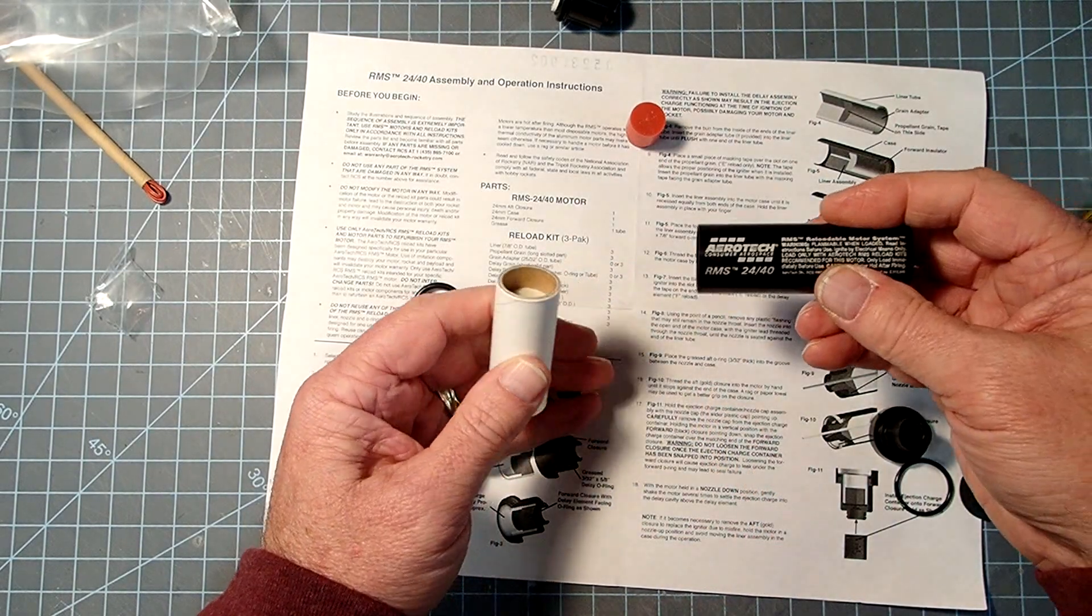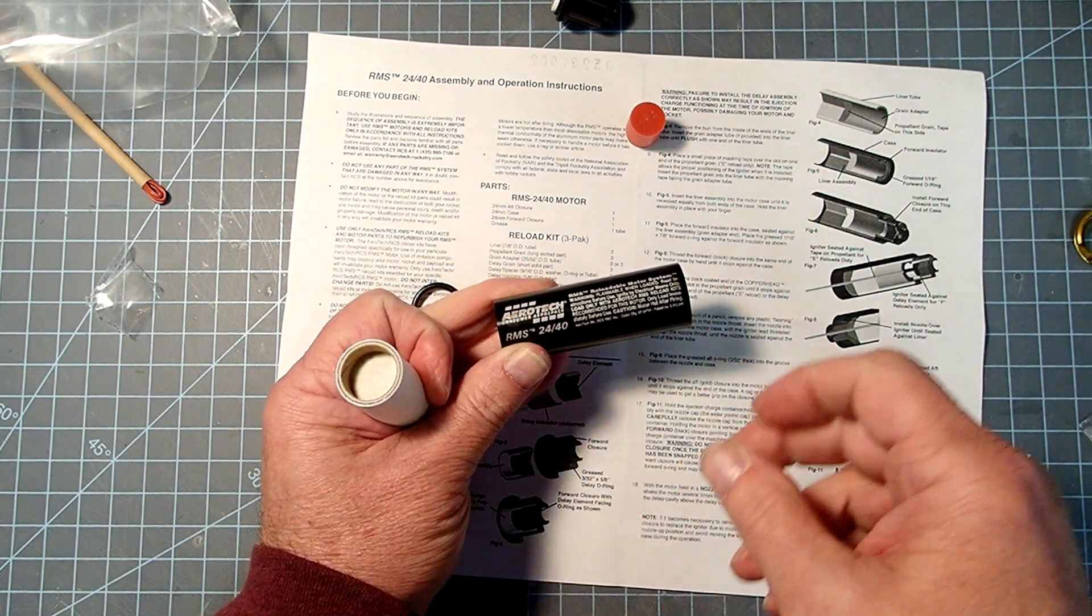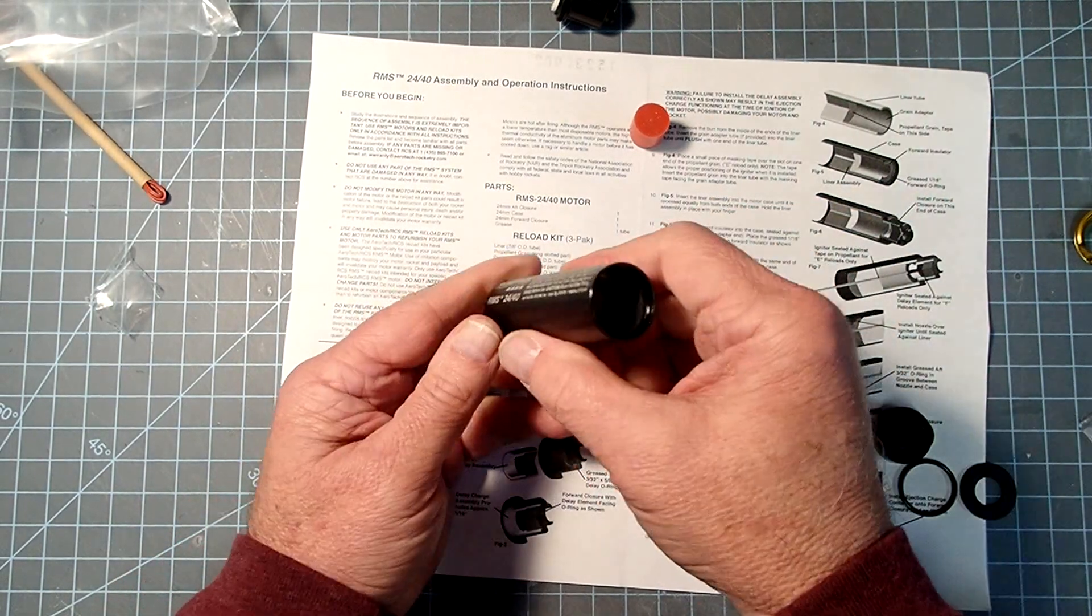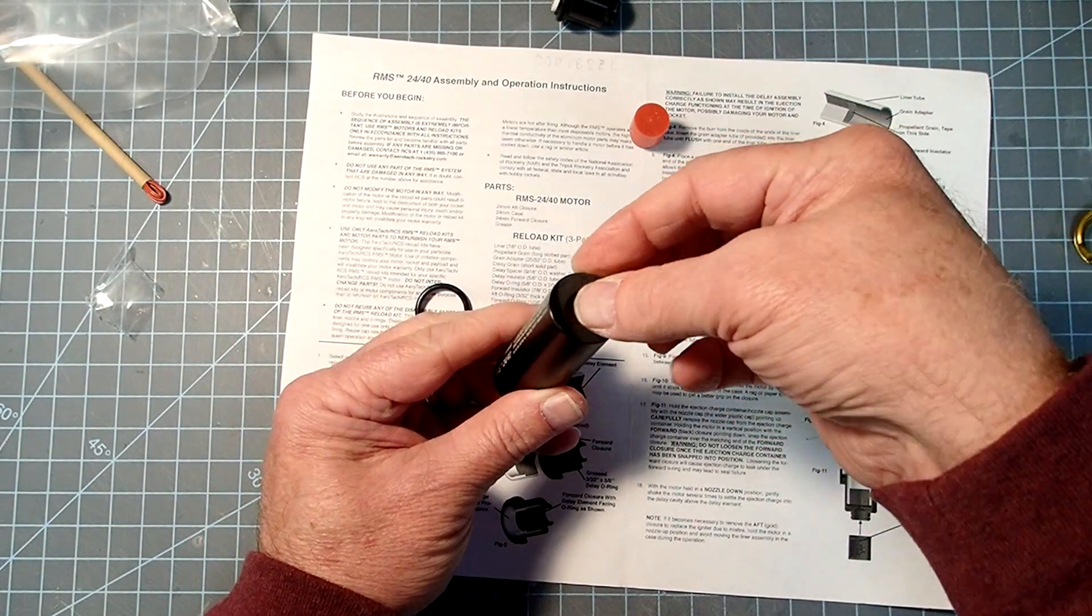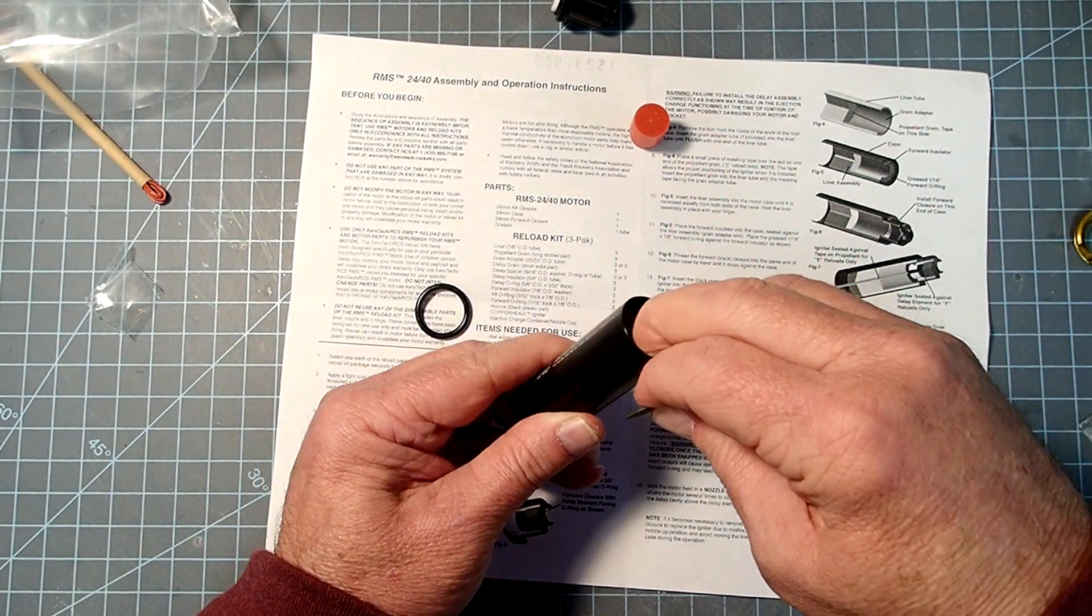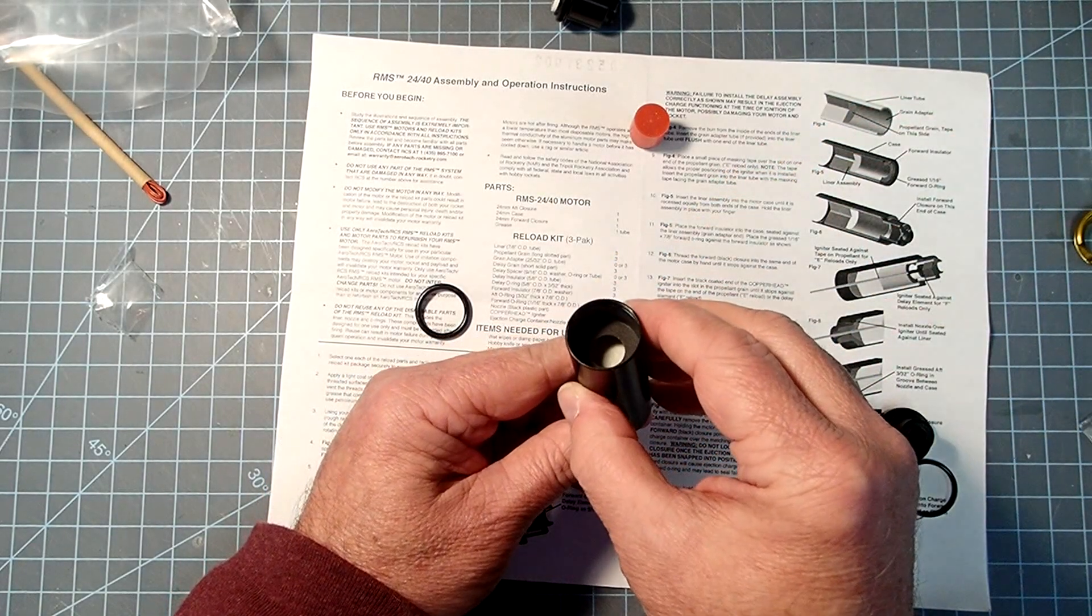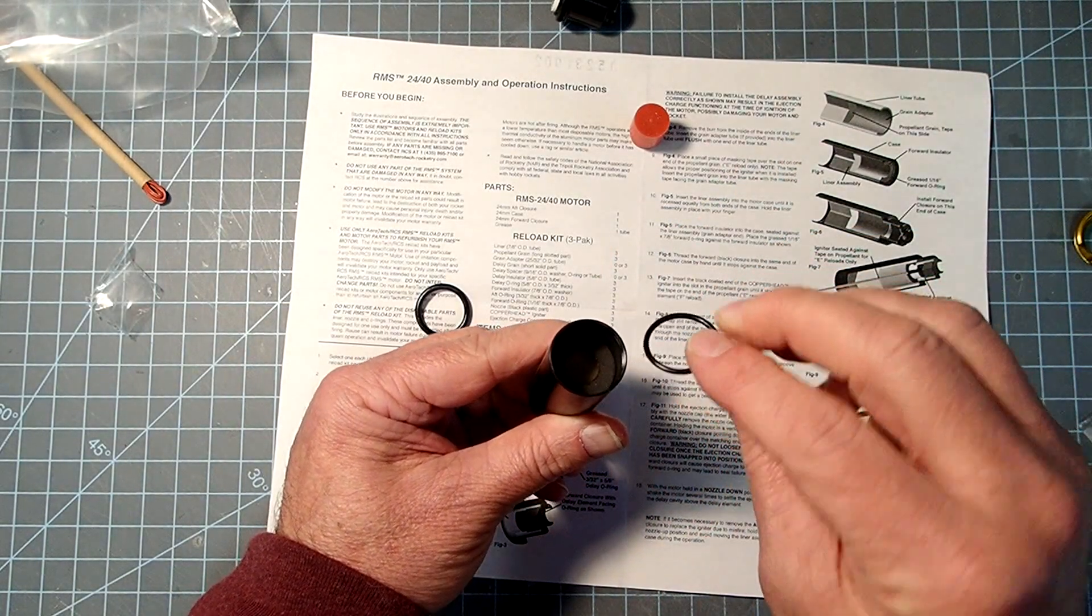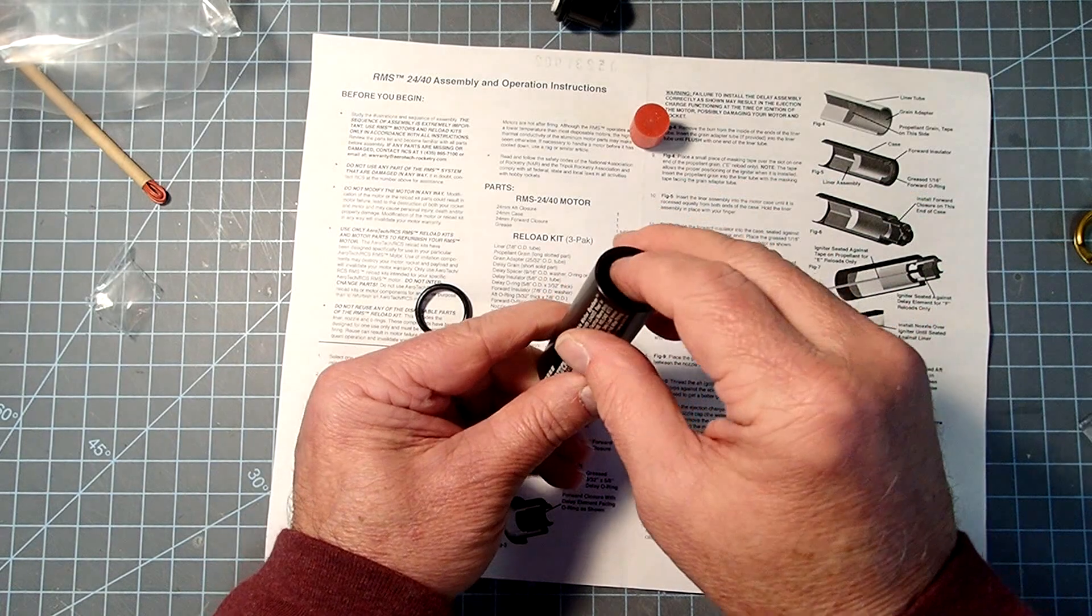Now we'll take the casing, decide which end is forward. It doesn't matter which one you use. I always put the Aerotech logo down at the aft end. So I'm going to slide this in. And then I'm going to take the insulating ring here, and that goes right on top. It's going to go right on top of the liner like that. And then we're going to take the thinner of the two large O-rings. So this is the 1/16th inch thick. And we're going to put that down on top of the insulator.